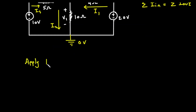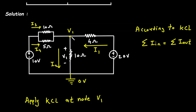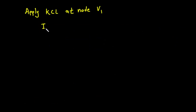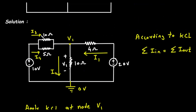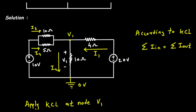Applying KCL at node V1: the incoming currents are i1, i3, and i4, so we write i1 + i3 + i4 on the left side. The current leaving this node is i2, so it is equal to i2.